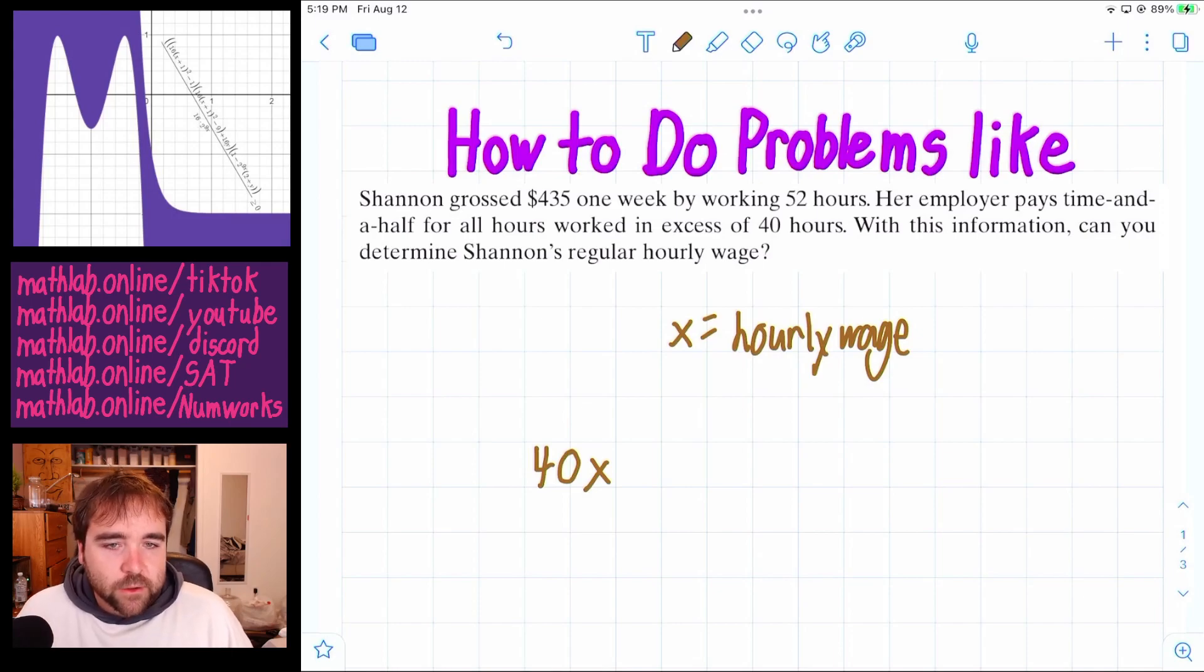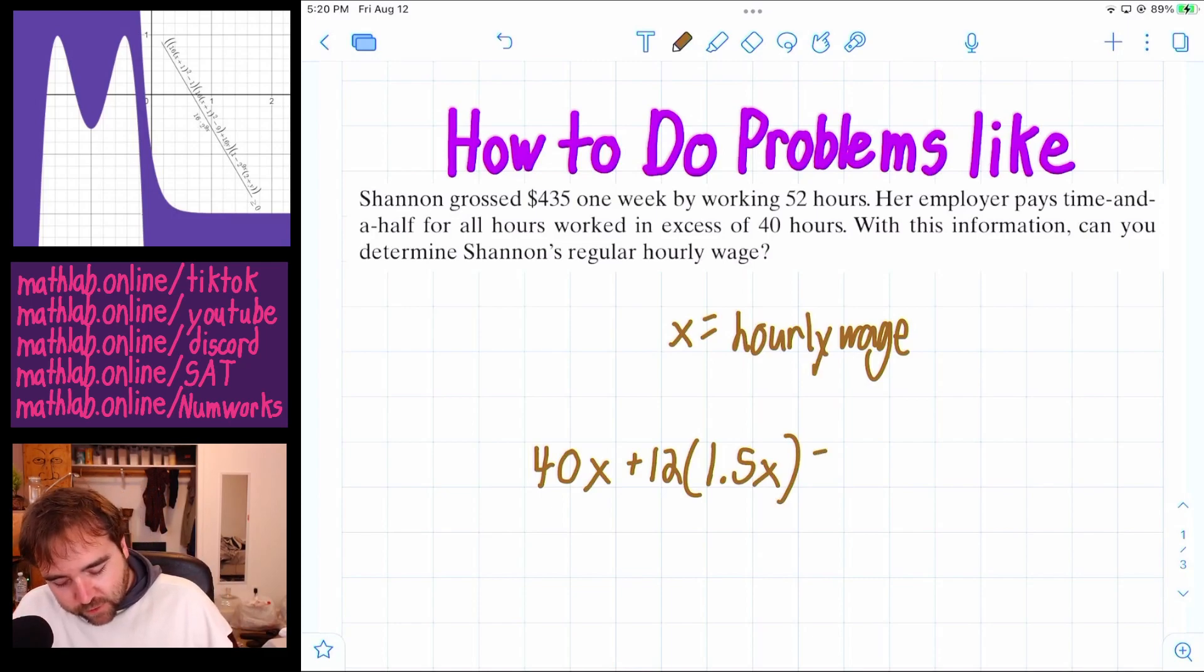But then there's 12 hours because she worked a total of 52. So that's 12 hours of overtime. So for 12 of those hours, she's getting paid time and a half, so 1.5 times her hourly wage. We don't really need those parentheses there. And then we do that out and that comes out to 435.